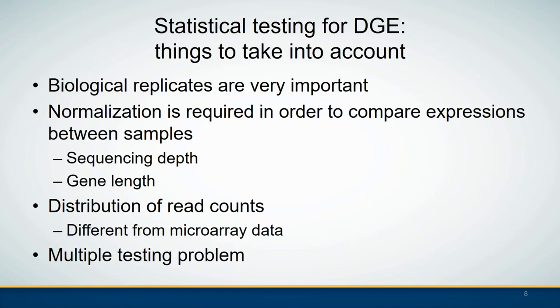When discussing statistical testing for differential gene expression, there are several things we need to take into account. The first and most important is that biological replicates are very important — you must have at least three replicates in each condition to have a valid statistical test. Since the gene expression level is affected by factors such as sequencing depth and gene length, normalization of the gene expression data is also required to make the read count data comparable among different groups.